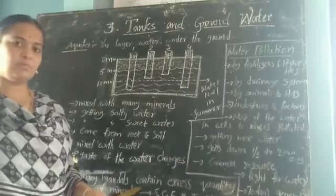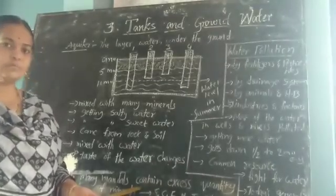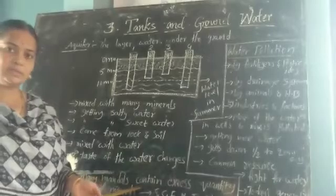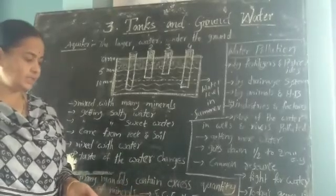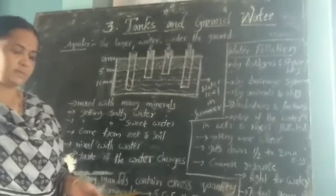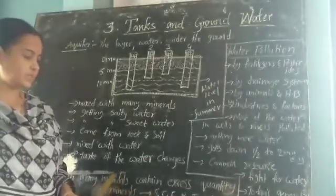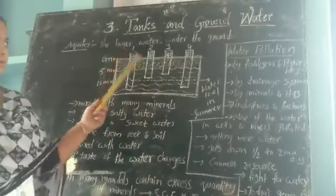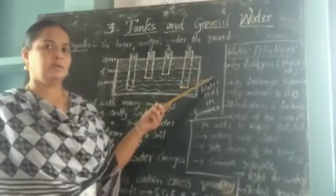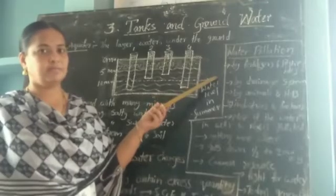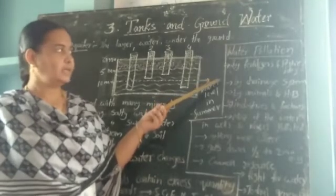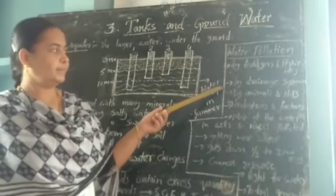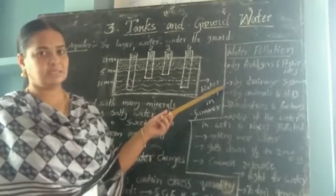If we drink water with excess minerals, we may get different types of diseases like cholera and diarrhea — these are water-related diseases. And if we drink such water, it can affect our bones and teeth also, so it is very dangerous. You should not drink such type of water. Next, water pollution. Water is polluted by the heavy use of fertilizers and pesticides, and also by the drainage system.